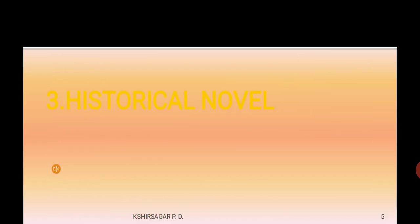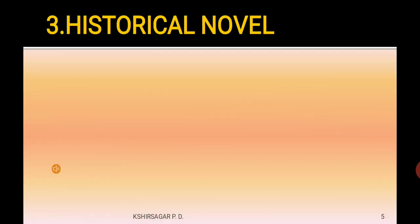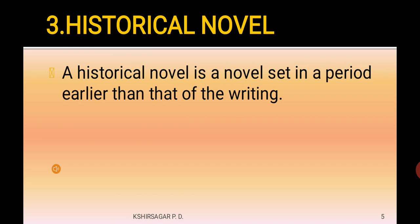The third type is the historical novel. A historical novel is a novel set in a period earlier than that of its writing — meaning the events described took place in the past, and the novel is written about that earlier time period.